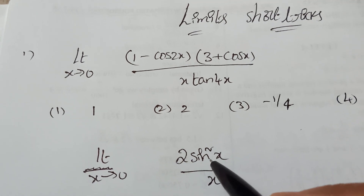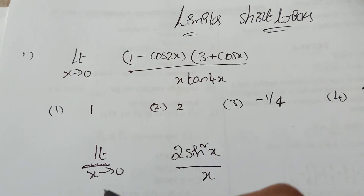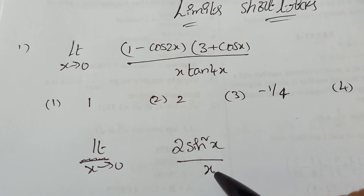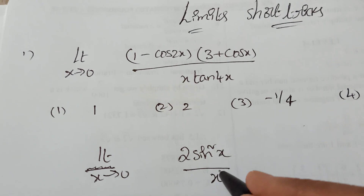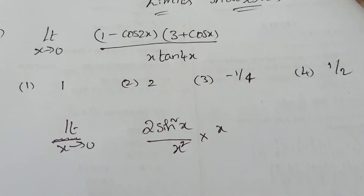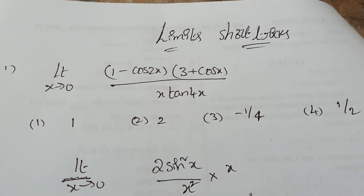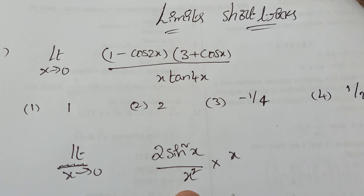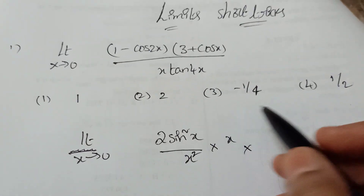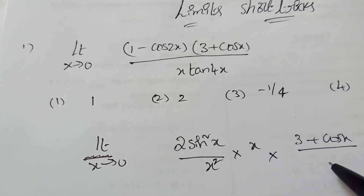You know the formula: whenever sinx/x is there, the limit equals 1. Here we have sin²x, so we need the square form. That's why we multiply and divide by x — to create (sinx/x)² which equals 1. Then write the remaining terms: 3 + cosx in the numerator and tan4x in the denominator.